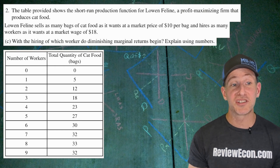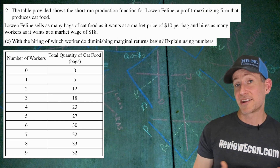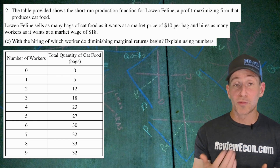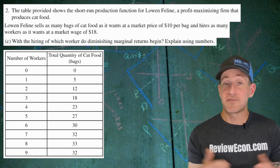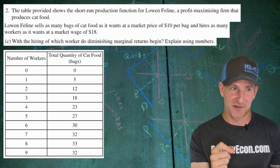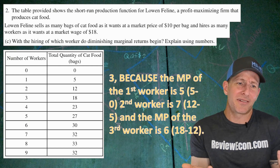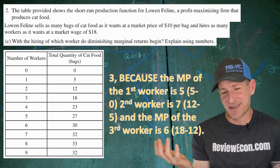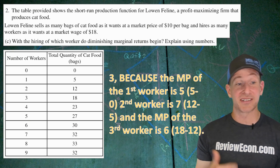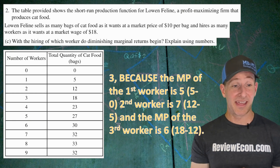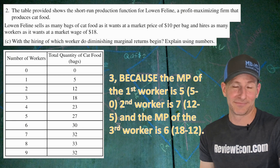With the hiring of which worker do diminishing marginal returns set in? Explain using numbers. Look at the changes in total product — that tells you the marginal product. As long as marginal product is rising, diminishing returns hasn't set in. The marginal product of the first worker is five, the second worker is seven, and the third worker is six. So marginal product starts to decrease with the hiring of the third worker, meaning diminishing marginal returns set in with the third worker.